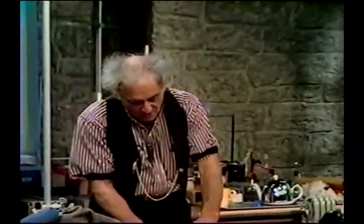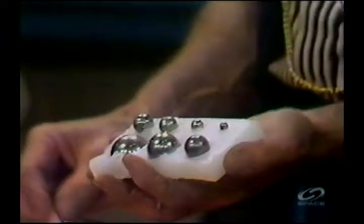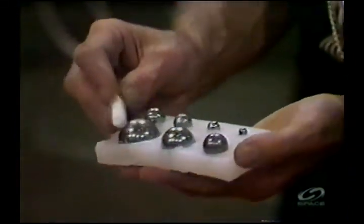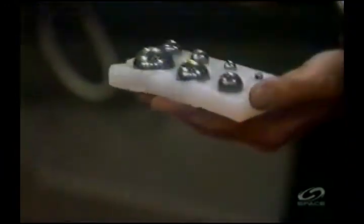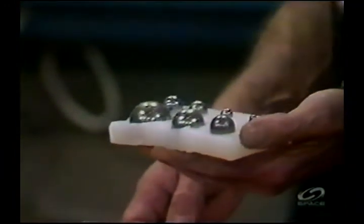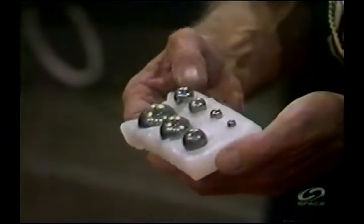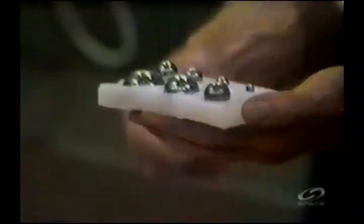I can show you that in another way. Here I have a slab of paraffin with different size spheres of iron. Different size. These spheres were heated in an oven and all brought to the same temperature. And then they were put on this block of paraffin.